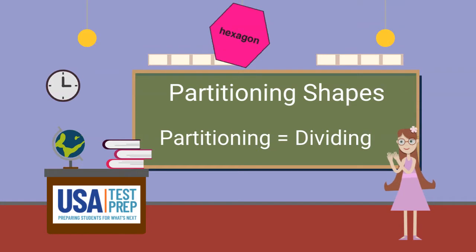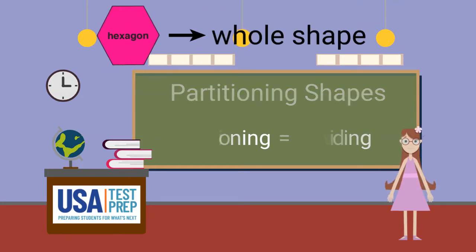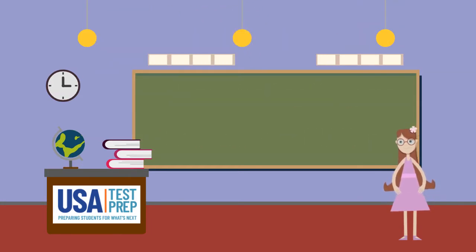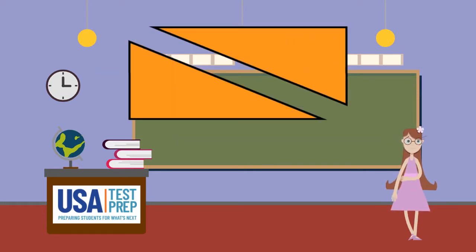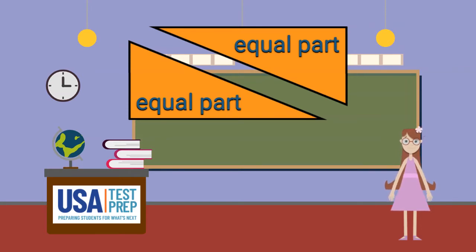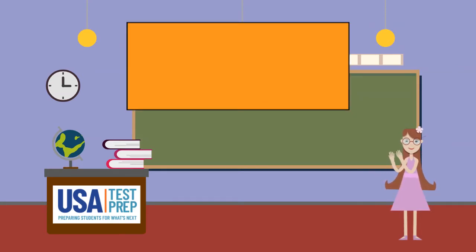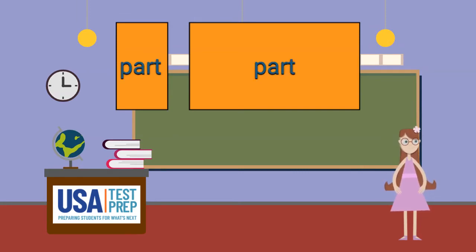When a shape is not partitioned or divided, it is a whole shape. When a shape is partitioned, it is split into parts. Sometimes those parts of a shape can be equal — this means they are all the same size. Sometimes those parts can be non-equal, meaning the parts are all different sizes.